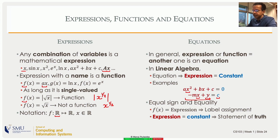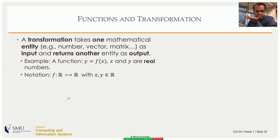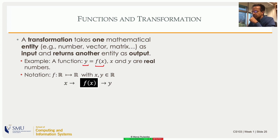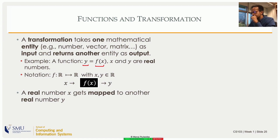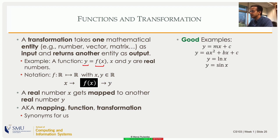So the equal sign can mean two different things: in one context it's an assignment as in programming languages, and in another it's an equation — a statement of truth. With that, we can look at a function as a transformation. A simple function y = f(x) takes a value x from the set of real numbers and transforms it into another value y in the real numbers. You can think of it as a black box: a real number goes in, another real number comes out. It's a transformation, a mapping, a function — in linear algebra, these terms are all synonymous.